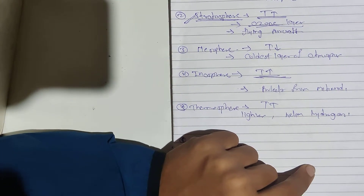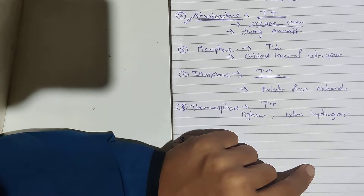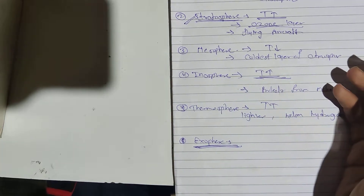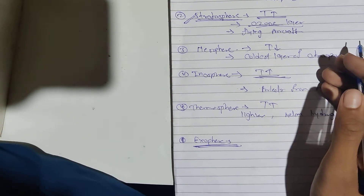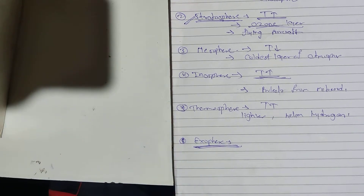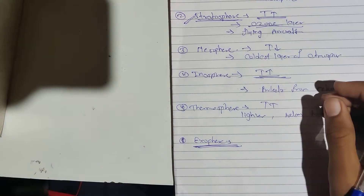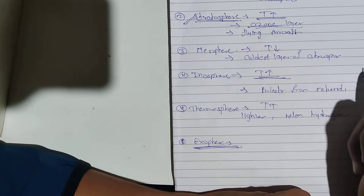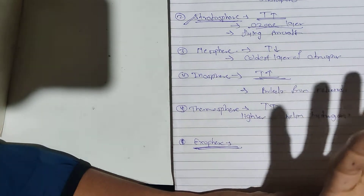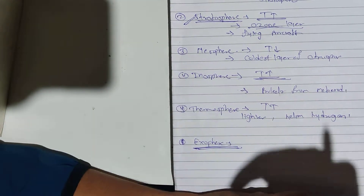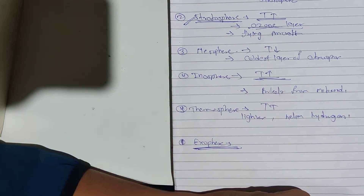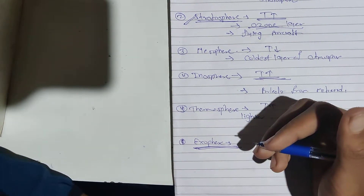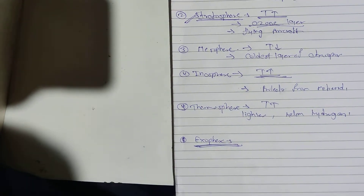The mesopause separates the mesosphere from the ionosphere. In the ionosphere, electrically charged ions reflect radio waves back to the earth, which is why radio communication is possible in this layer. The ionosphere also protects us from meteorites, which burn up in this layer.